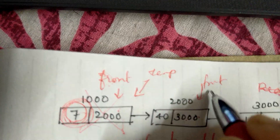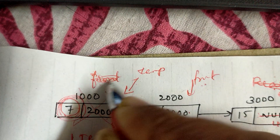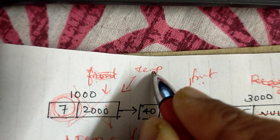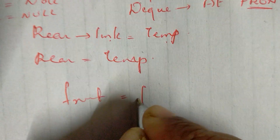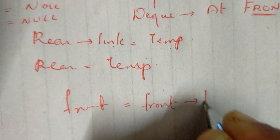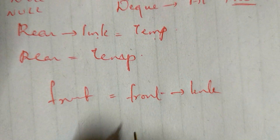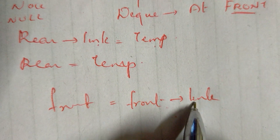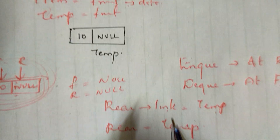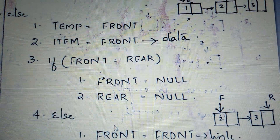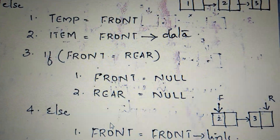This node is the front. This is the first node. We will delete the temp pointer. Now we delete the node. We will delete the front. The second node becomes the new front. I assign the first node to temp. Now it is ready to delete the node.